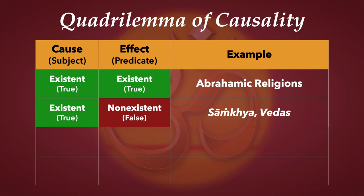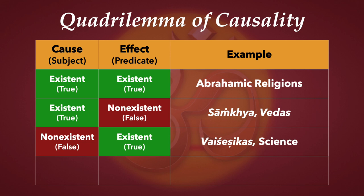Shankaracharya is famous for saying, 'Brahma satyam, jagat mithya' — Brahman is real, diversity is false, and the Jiva is one with Brahman. The third possibility is that the cause is non-existent or false and the effect is existent or true. The example of this would be the Vaisheshikas, the atomists, and of course modern science, which is based on it. And finally, both cause and effect can be non-existent, and a good example of that is Southern Buddhism.